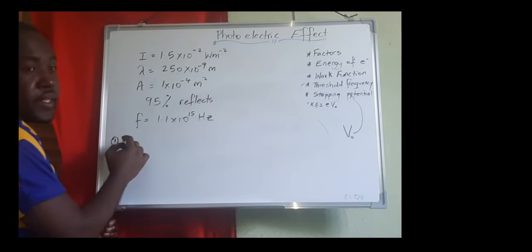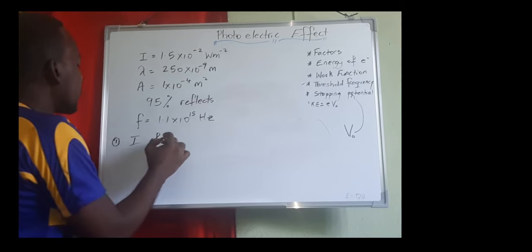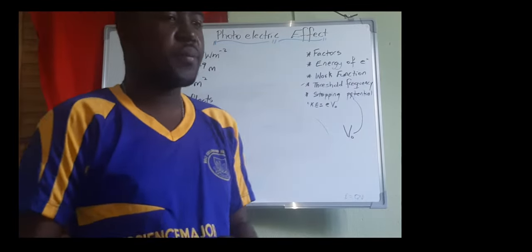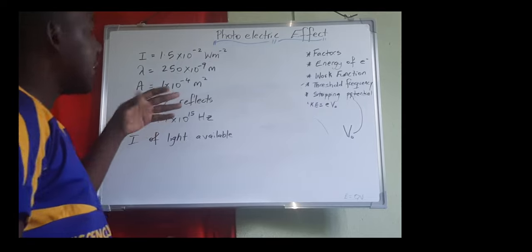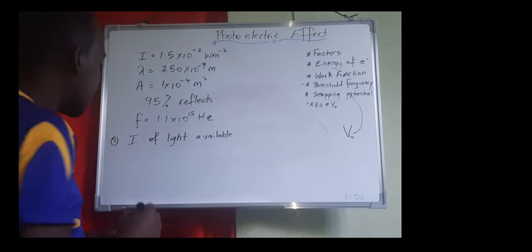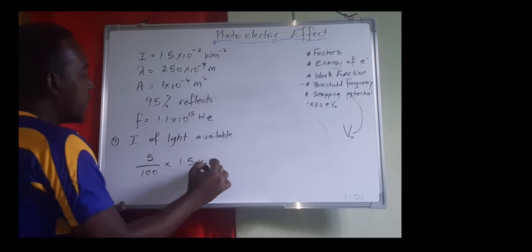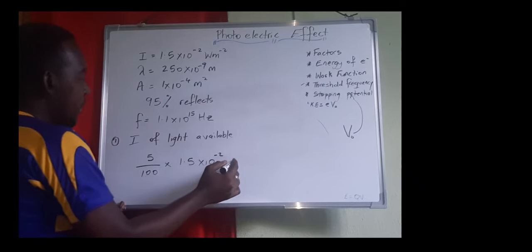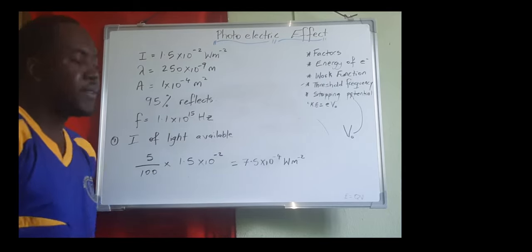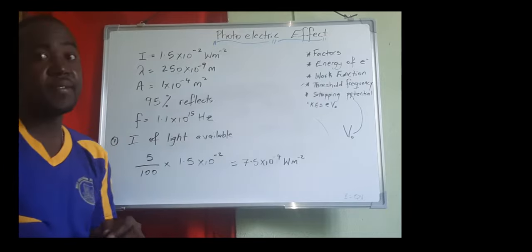Part one asks us to calculate the intensity of light available for the photoelectric effect. Since 95% of the light is reflected, only 5% is available for the photoelectric effect to occur. We find 5% of the intensity: 5% of 1.5 × 10⁻² W/m² equals 7.5 × 10⁻⁴ W/m². That is the available intensity of the light since the surface reflects 95%.